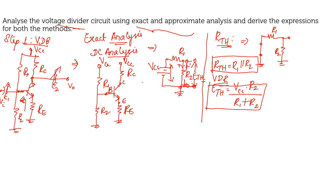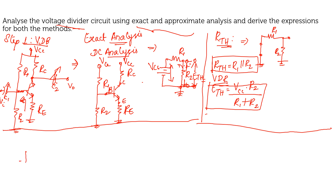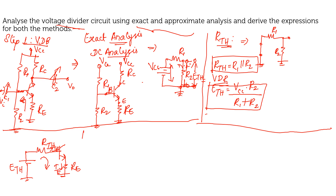Once you have the Thevenin's equivalent voltage and resistance, redraw the circuit as ETH in series with RTH connected to the input side and RE. The current flowing through the loop is IB, and at the emitter side the current is IE.